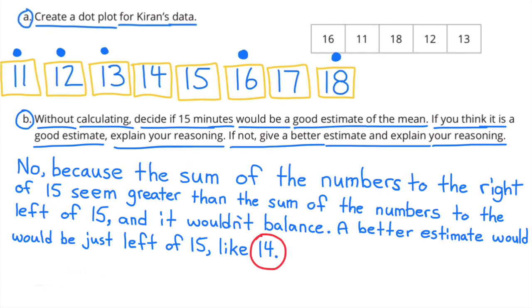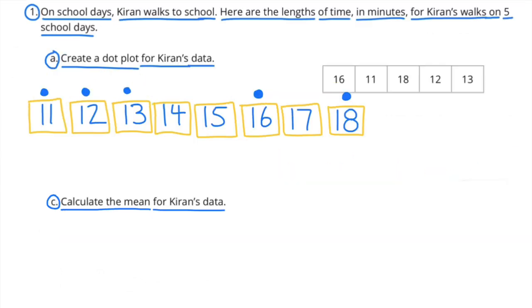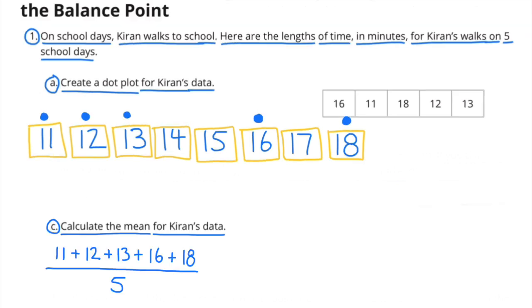No, because the sum of the numbers to the right of 15 seems greater than the sum of the numbers to the left of 15, and it wouldn't balance. A better estimate would be just left of 15, like number 14. Part C: Calculate the mean for Kieran's data. 11 plus 12 plus 13 plus 16 plus 18, divided by 5.